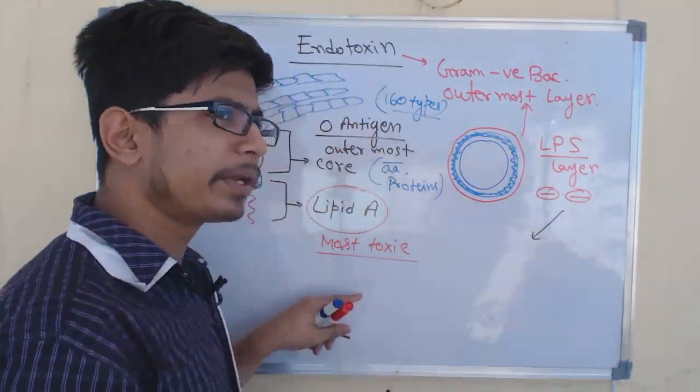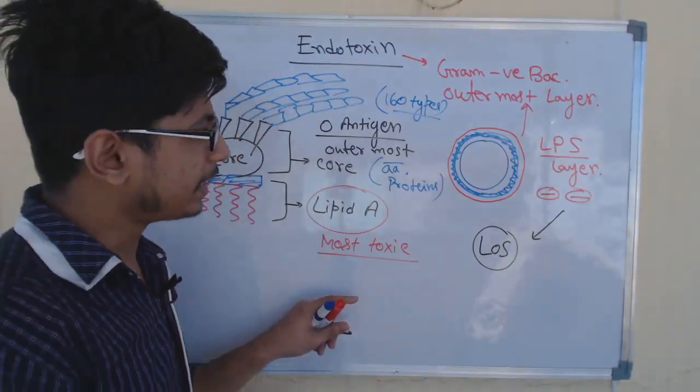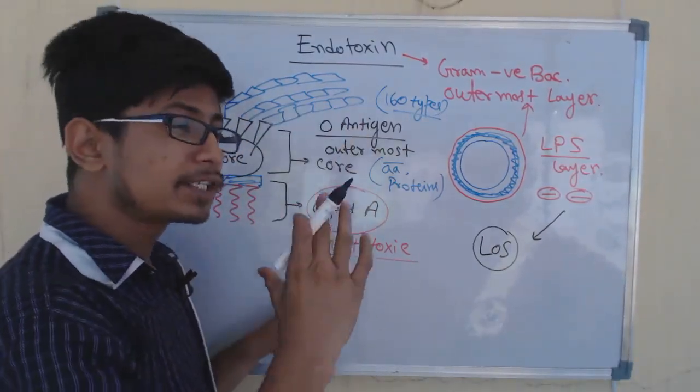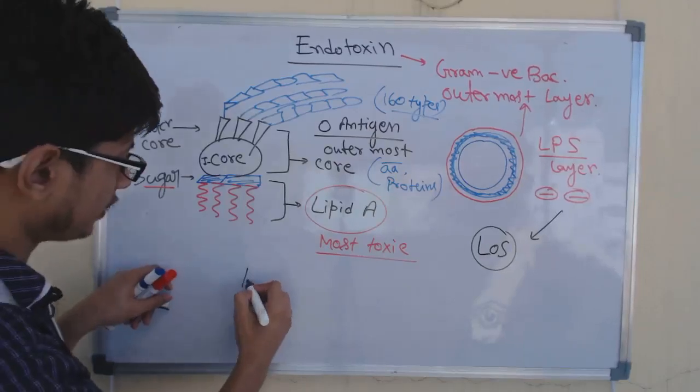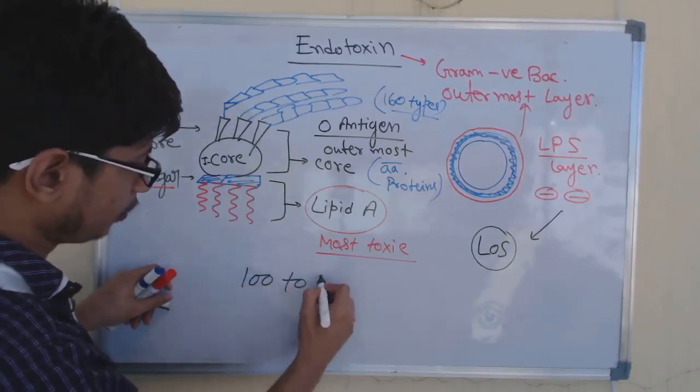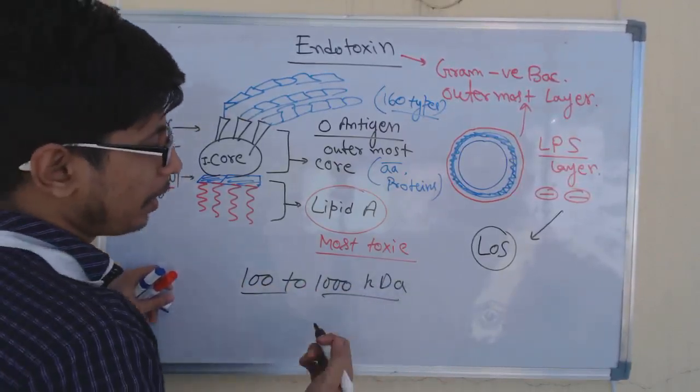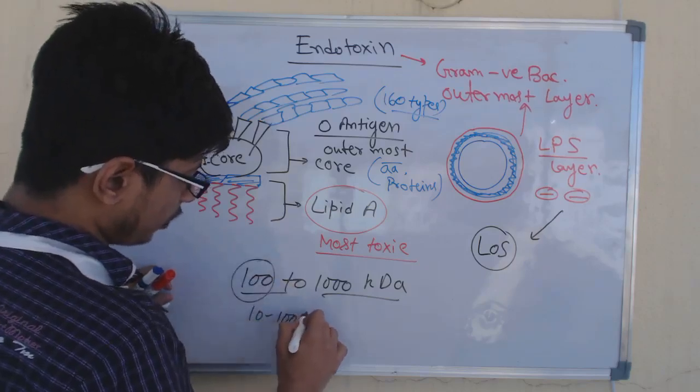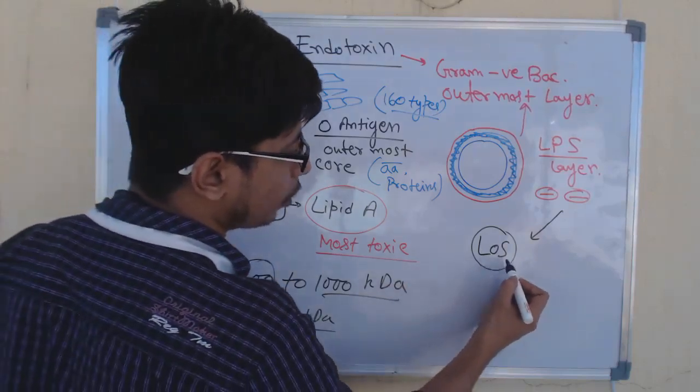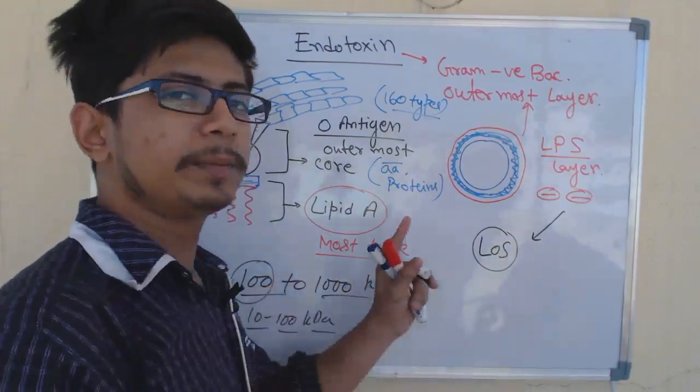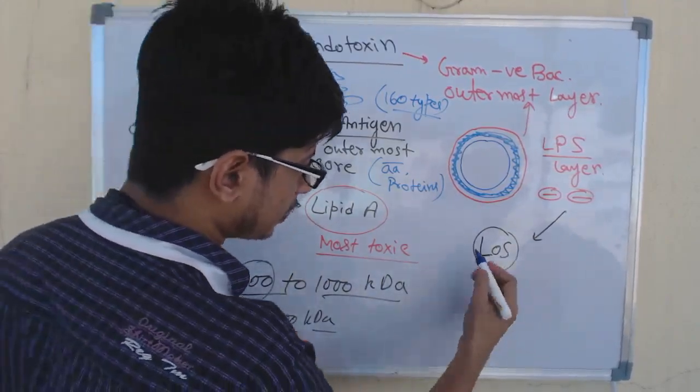There is another type of molecule that we can find in some gram-negative bacteria—they are known as LOS. For very small types of bacteria, they don't have much complexity like this, but smaller molecular weight protein, that is LOS. Normally these endotoxins are from 100 to 1000 kilodaltons in their molecular weight—very huge proteins. But very small, like 10 to 100 kilodaltons, there are some endotoxins that can be found. Those endotoxins are known as LOS or lipooligosaccharide—not lipopolysaccharide, lipooligosaccharide.